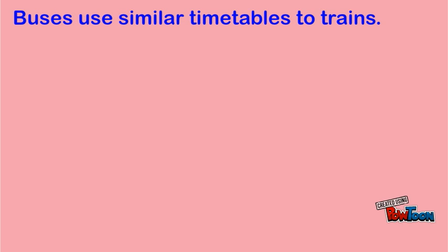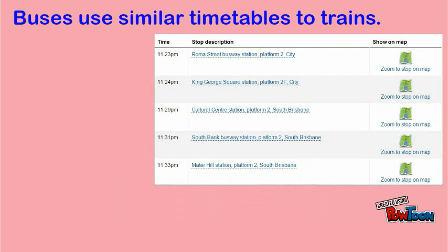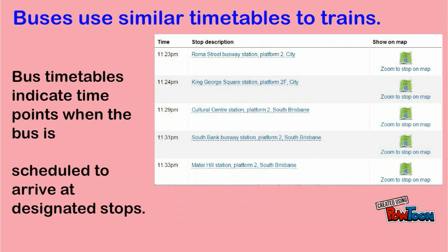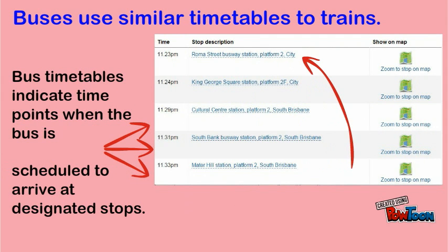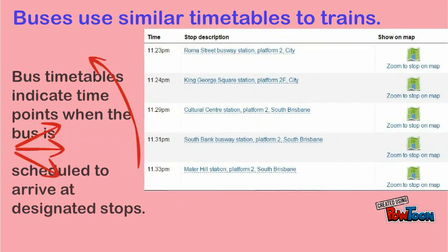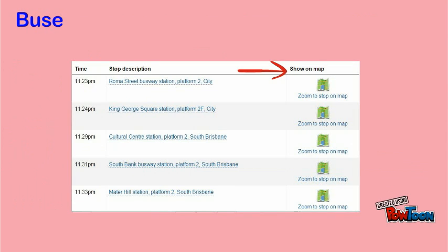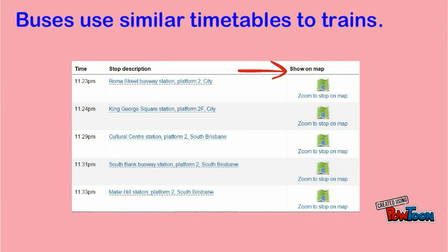Buses, ferries and trams all have similar timetables to trains. Let's look at the last timetable for the day — a bus timetable. A bus timetable indicates time points when the bus is scheduled to arrive at designated stops. Just like trains, buses have a timetable that has destinations listed where the bus will stop at and a map so you can see where the bus is heading to.